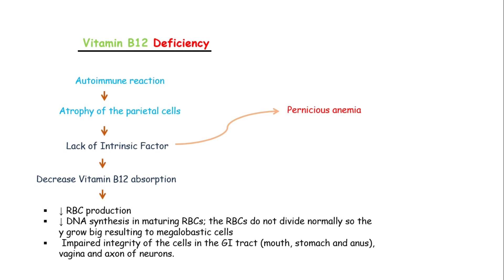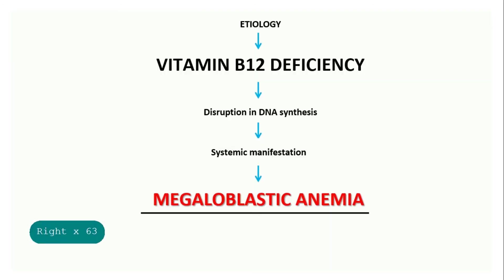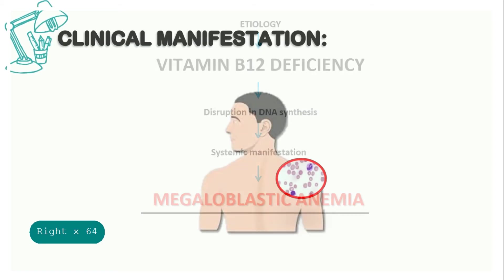Decreased vitamin B12 absorption results in decreased RBC production, decreased DNA synthesis in maturing RBCs. The RBCs do not divide normally, so they grow big, resulting in megaloblastic cells, and impaired integrity of the cells in the GI tract, vagina, and axons of neurons. Vitamin B12 deficiency may lead to disruption in DNA synthesis, systemic manifestation, and may result in megaloblastic anemia.